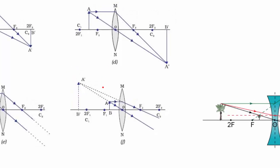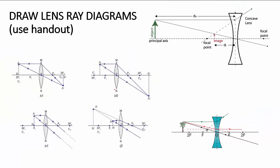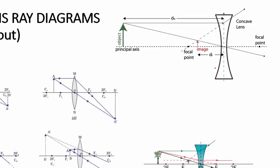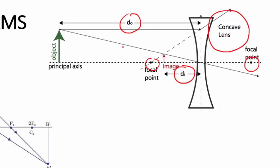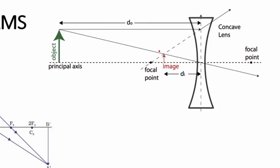Now let's look at the biconcave lens — also called just the concave lens here. We again have focal points on each side. You'll also see labels like di and do, which relate to the lens equation used to mathematically calculate image properties, but we're not doing that — let's just focus on the ray diagrams.